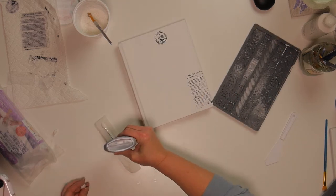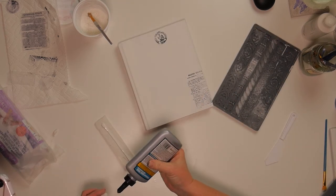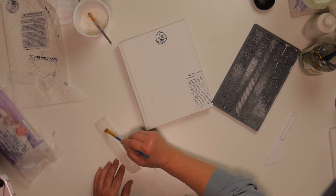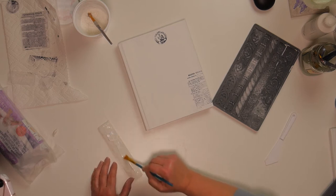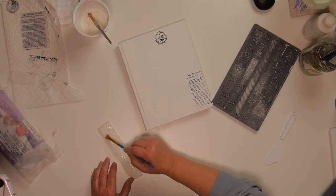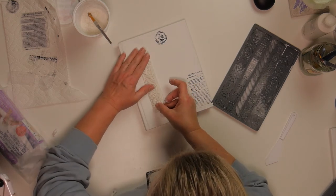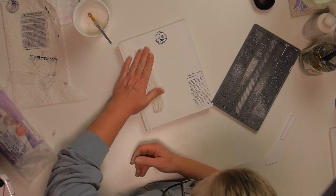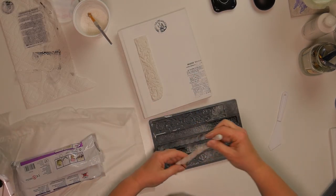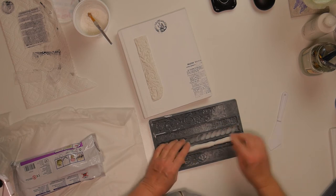I use Titebond glue to glue all of my clay pieces on this book. I'm just going to make sure that it's all spread out pretty good with the paintbrush and glue it on. You're going to let that dry because you want the glue to dry, and you also want to let the mold, the clay mold, to dry itself.